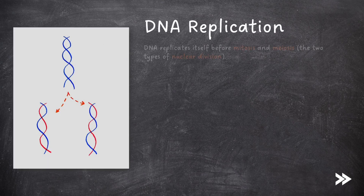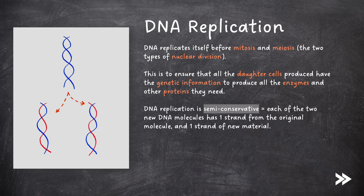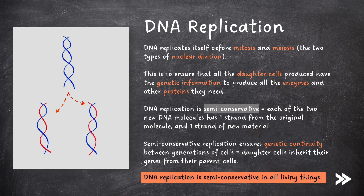DNA replicates itself before mitosis and meiosis, which are the two types of nuclear division. This is to ensure that all daughter cells produced have the genetic information to produce all the enzymes and other proteins they need. DNA replication, as proposed by Watson and Crick, is semi-conservative, meaning that each of the two new DNA molecules has one strand from the original molecule and one strand of new material. Semi-conservative replication ensures genetic continuity between generations of cells, meaning that daughter cells inherit their genes from their parent cells. DNA replication is semi-conservative in all living things.